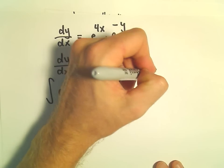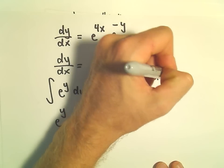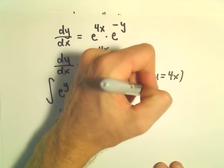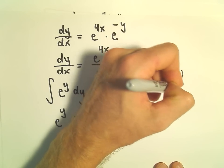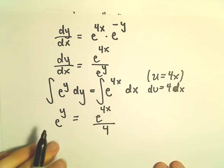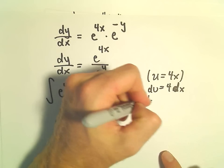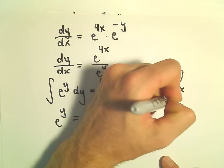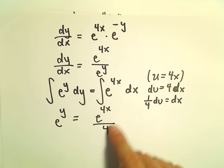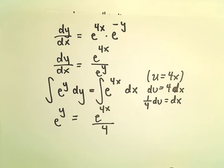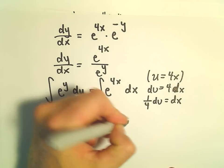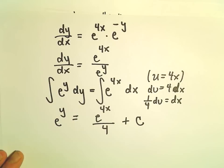The antiderivative of e^(4x) will be e^(4x)/4. To integrate this, we do a u substitution. Let u = 4x, so du = 4dx. Dividing by 4, we have (1/4)du = dx. That's where the 1/4 is coming from. And then we have our plus C value.